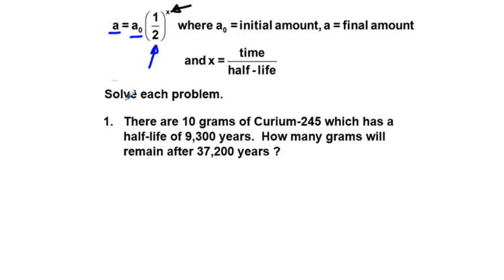We have problems one through six. I'm going to do the odd number problems: one, three, and five, plus I'm going to start into six a little bit, since problem six is a little different. Let's solve each problem. We have: there are 10 grams of curium-245, which has a half-life of 9,300 years. How many grams will remain after 37,200 years?